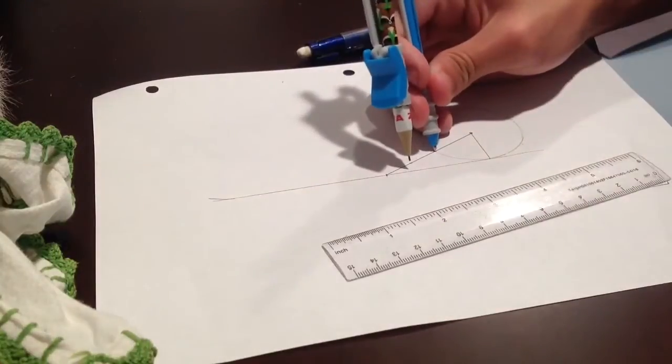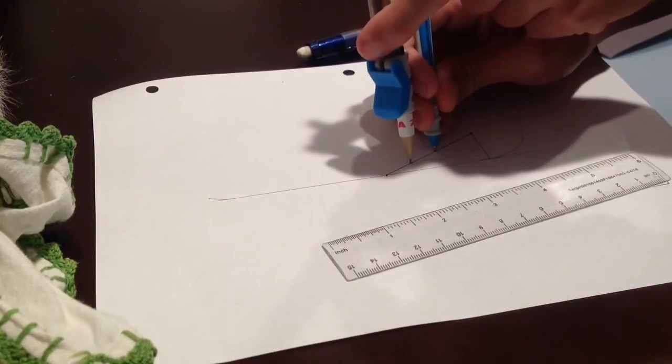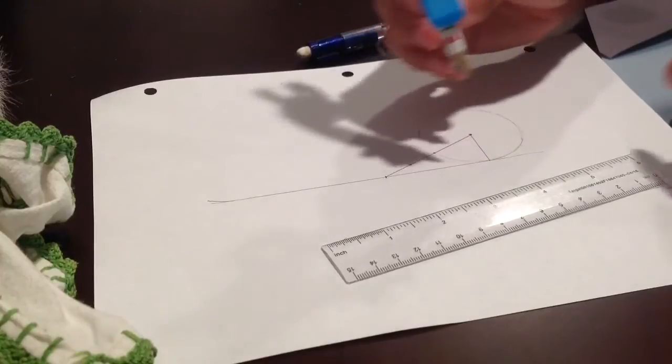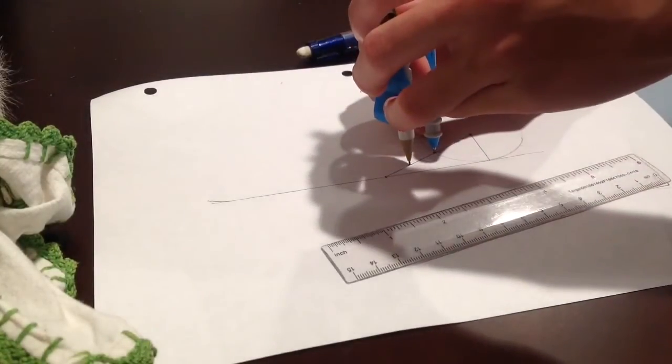Take your compass and measure the distance between that midpoint and the point where the line meets the circle. You're going to need to draw ten circles around that large circle you originally drew. This will be the radius for all of them.